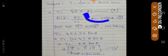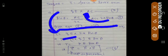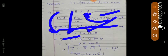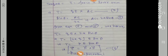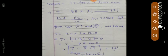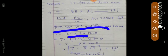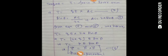Substituting into the torque expression: τ = qE × 2a sin θ. Rearranging, τ = (2aq) × E × sin θ = pE sin θ, since p = 2aq is the dipole moment. In vector form, torque τ = p × E. This is the required expression for torque acting on an electric dipole in a uniform electric field.